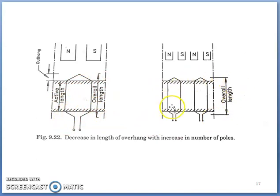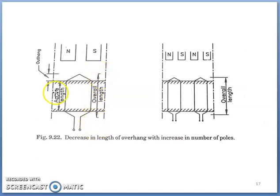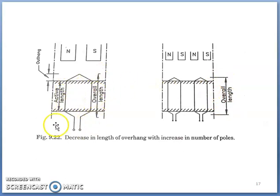This is for a two-pole machine and this image shows a four-pole machine. In the case of a two-pole machine, the length of inactive copper is more compared to that of a four-pole machine. Depending upon the length and number of overhangs and the number of poles, the overhang length of the machine will change. Whenever the number of poles is less, the overhang will be more. The overall length depends upon the active length of conductor embedded in the slot and the overhang.